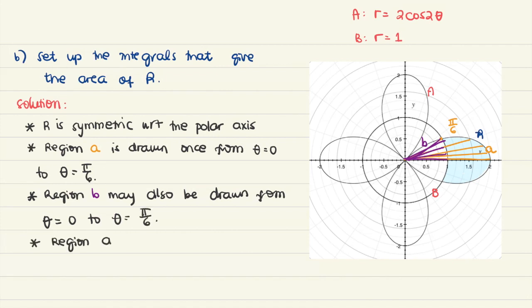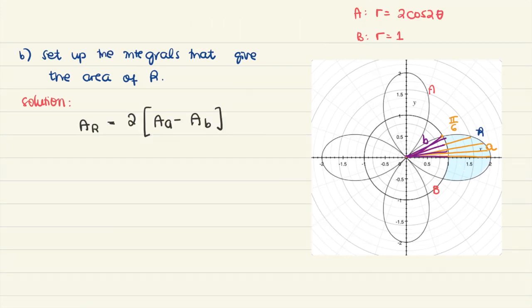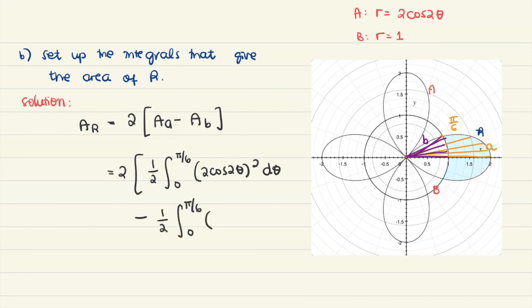We notice that region A contains region B — region A is larger than region B. So half the area of R is just the area of region A minus the area of region B. The area of R is twice that difference. Plugging into the area formula: the area of curve A is half the integral from 0 to pi over 6 of 2 cosine 2 theta quantity squared d theta, minus the area of curve B, which is half the integral from 0 to pi over 6 of 1 squared d theta.